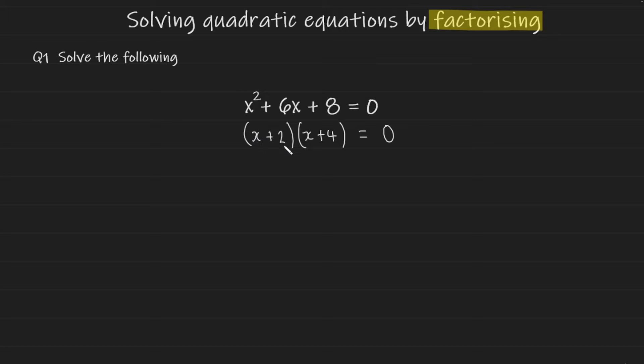Now you can go ahead and take each bracket and equal it to 0. So we have the following: x plus 2 is equal to 0 and x plus 4 is equal to 0. Now you can go ahead and rearrange for x in each expression to get your answer.